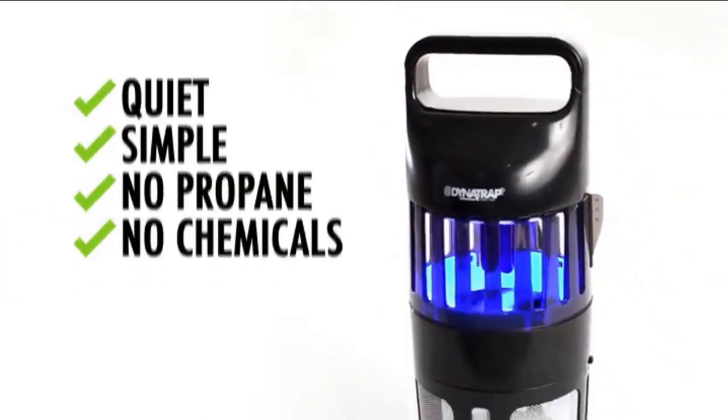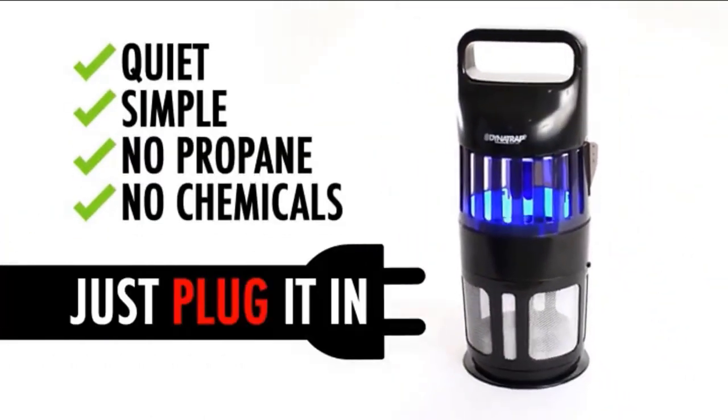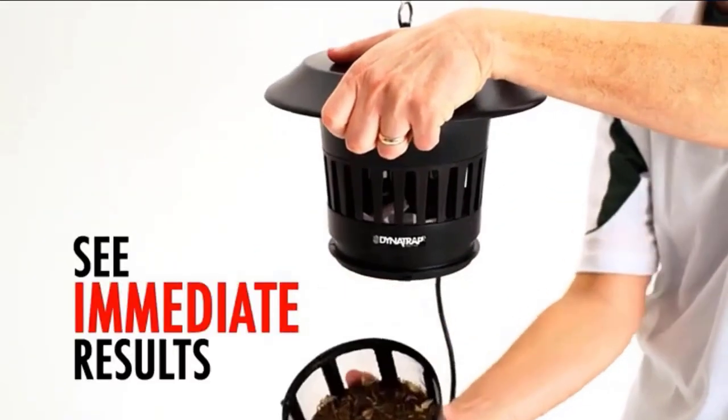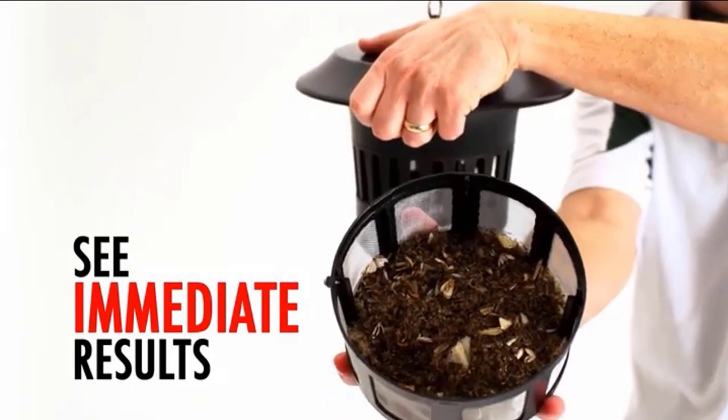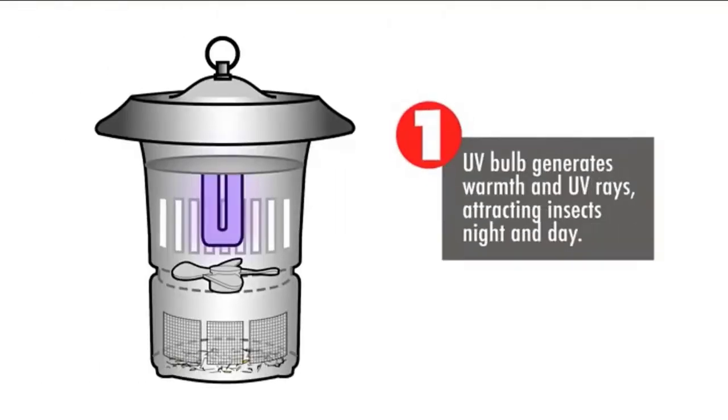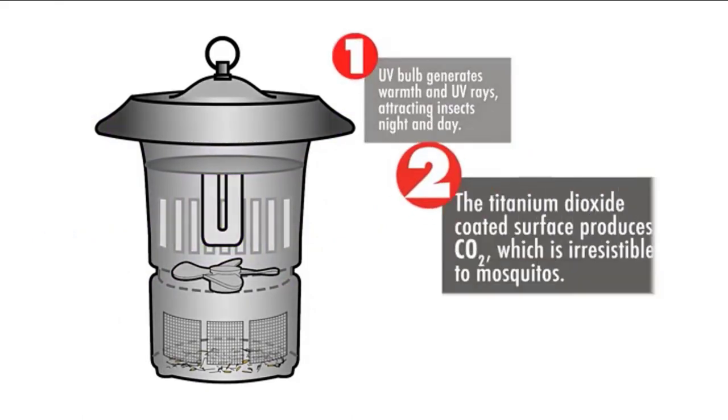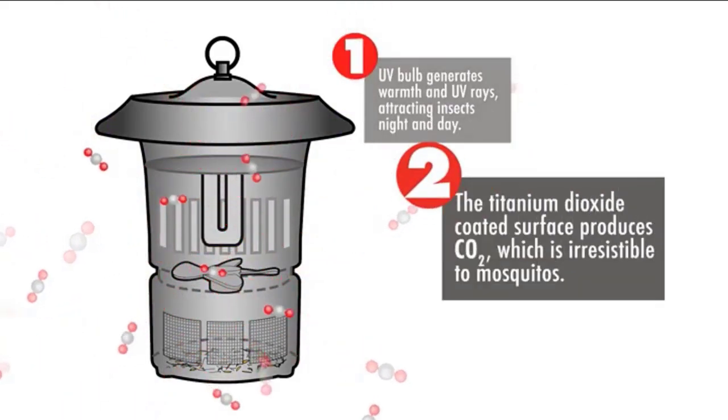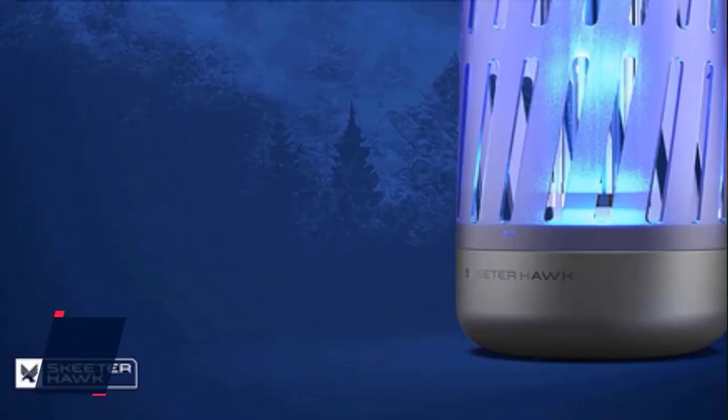Extended coverage up to one acre. Durable all-weather insect trap for use indoors and outdoors. Plugs in the standard 110-volt outlet. Requires no attractant or propane. Attracts and traps flying insects such as mosquitoes, biting flies, wasps, hornets, moths, and more. Check the description for details and prices. Number 4.